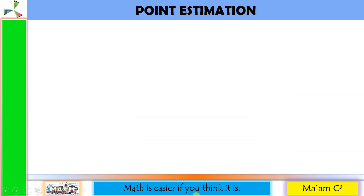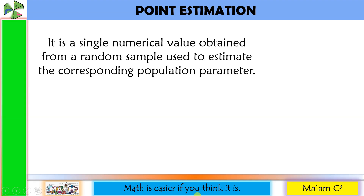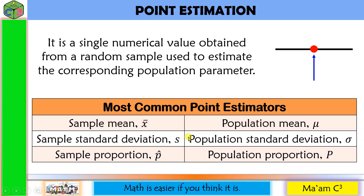Let's start with point estimation. It is a single numerical value obtained from a random sample to estimate the corresponding population parameter. Here are the most common point estimators: sample mean x-bar is the best point estimate for the population mean mu; sample standard deviation s is the best point estimator for the population standard deviation sigma; and sample proportion p-hat is the best point estimator for population proportion capital P.